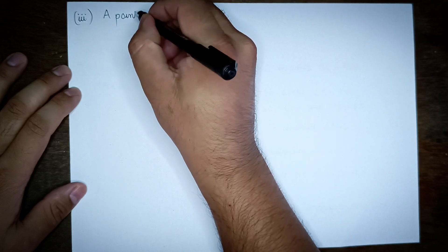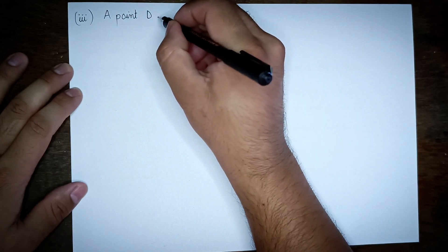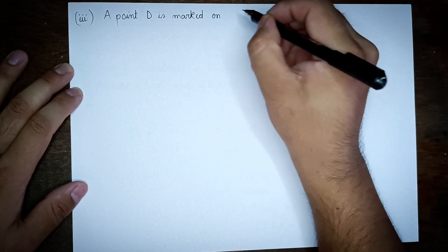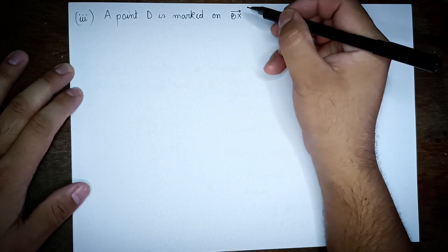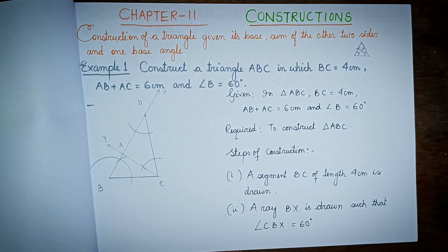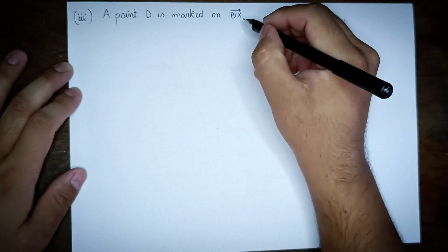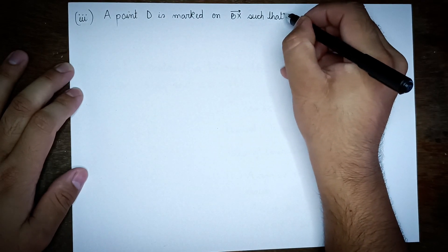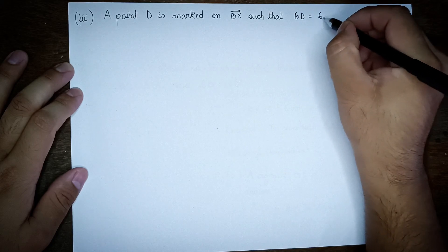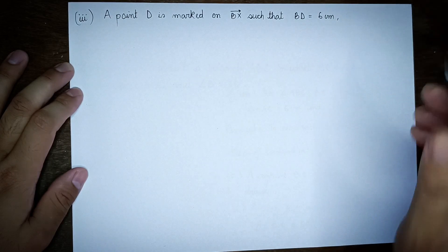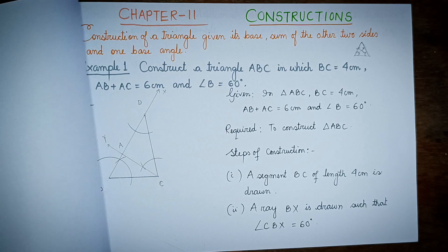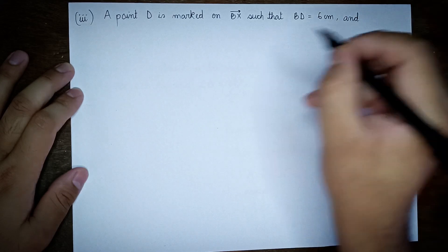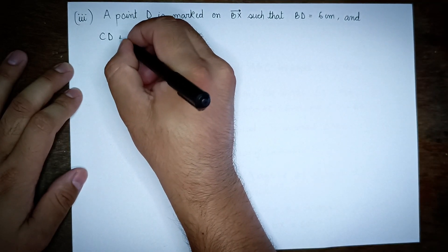Step 3: Point D is marked on ray Bx such that BD is equal to 6 cm. Then CD is joined.